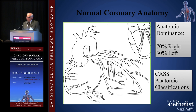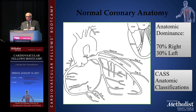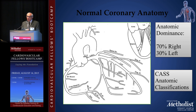We use the CAST system for anatomic classification of coronary artery segments and branches. This has become important for things like the SYNTAX score, and for standardization of reporting for registries.